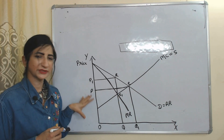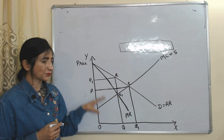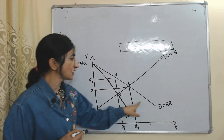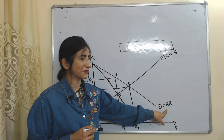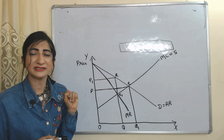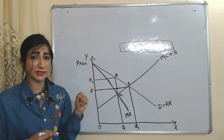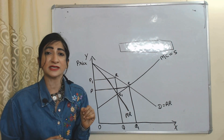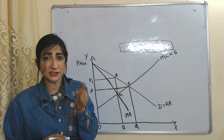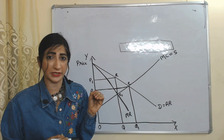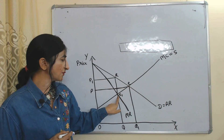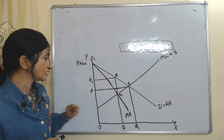Now we will see equilibrium price and output in both markets — perfect competition and monopoly — with the help of this diagram. On the x-axis we have quantities; on the y-axis we have price, cost, and revenue. This one is the marginal revenue curve and this one is the demand curve. As we discussed, perfect competition produces more and charges less price as compared to monopoly, so the equilibrium point of perfect competition is E but the equilibrium point of monopoly is E1.